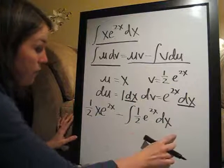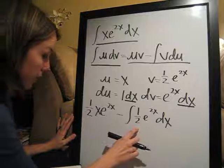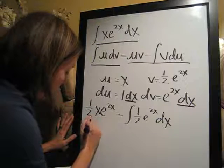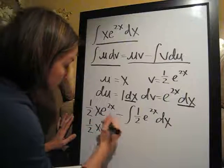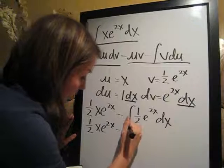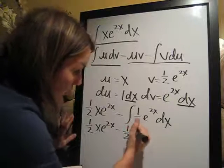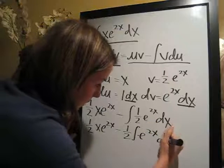So now that we've written out this equation, we're going to go ahead and take the integral here. So this is going to stay the same, 1 half x e to the 2x minus, we're going to pull the 1 half outside of the integral, and we're going to take the integral of e to the 2x dx.